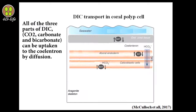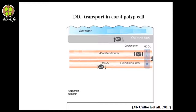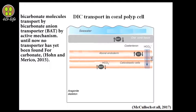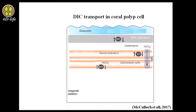All three components of dissolved inorganic carbon — CO2, carbonate, and bicarbonate — can be taken up into the coelenteron by diffusion. However, passive diffusion is not the only uptake mechanism. Bicarbonate molecules are also transported by the bicarbonate anion transporter, or BAT. So far, no specific transporter has been found for carbonate, though it appears that carbonate, bicarbonate, and CO2 may also be transported via BAT or calcium ATPase pumps.